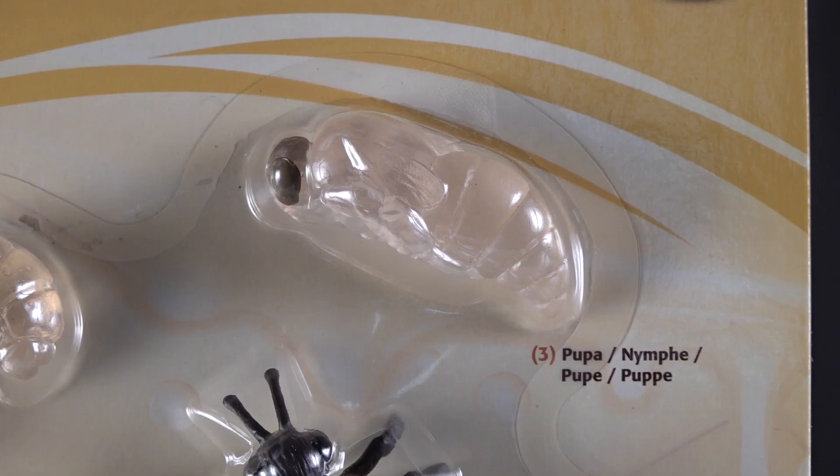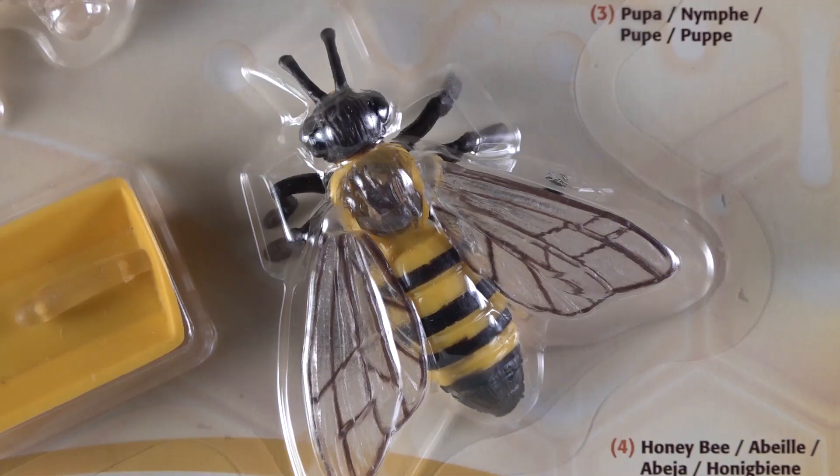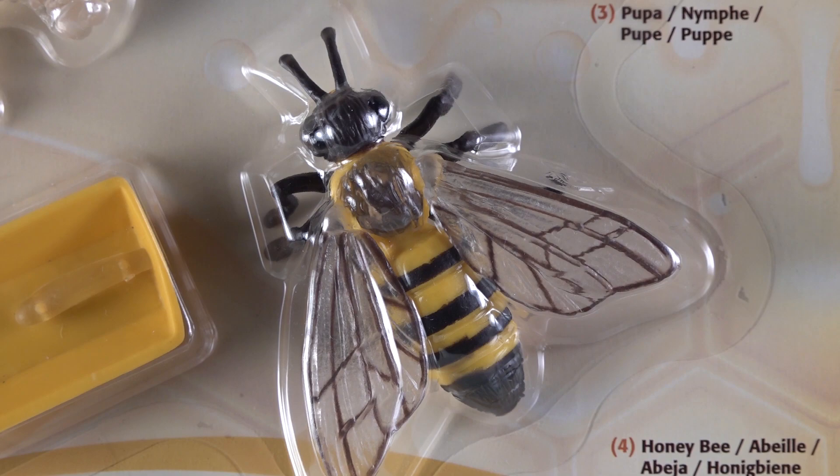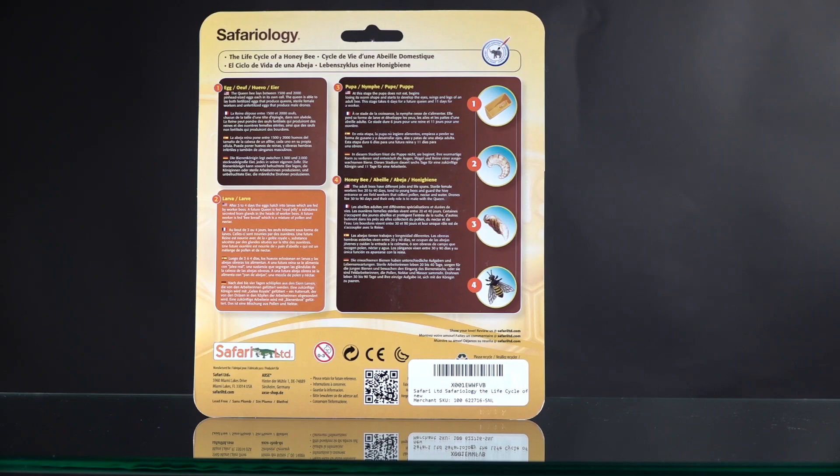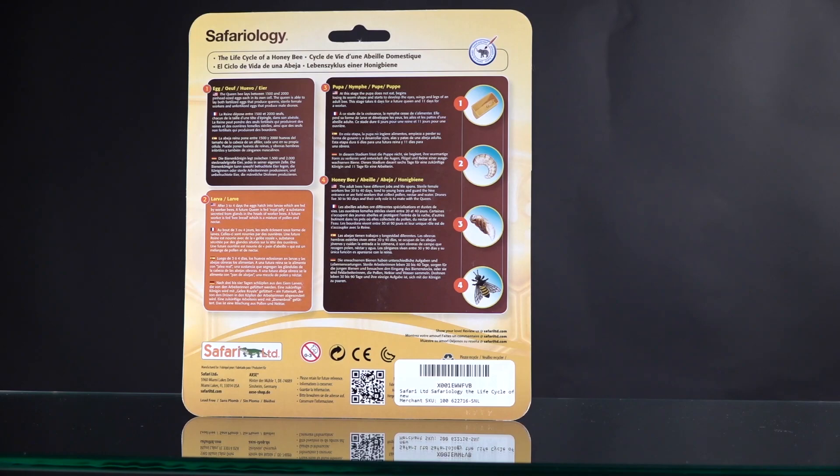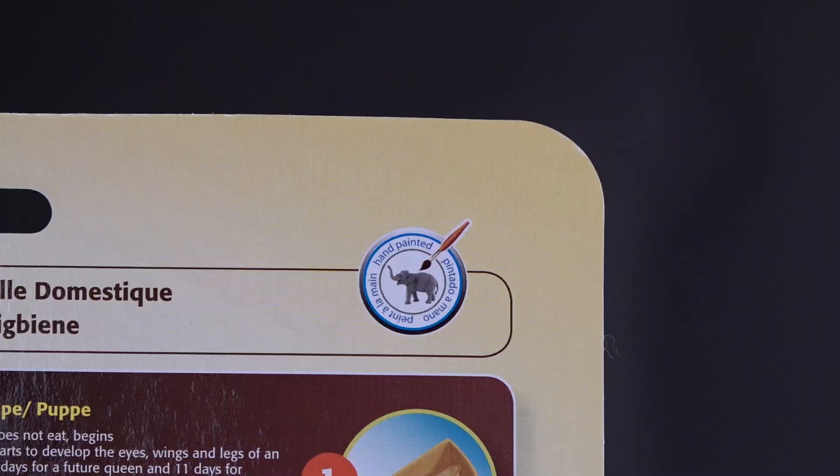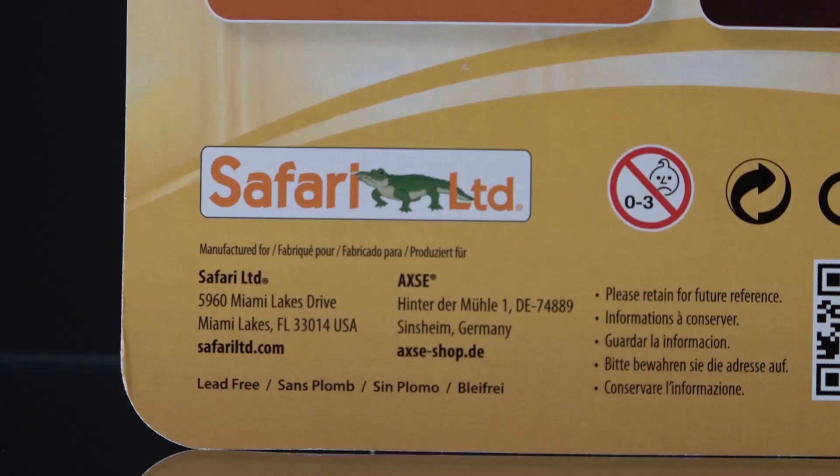This is a close-up of the pieces that are included here: an egg, the larvae, the pupae, and of course the honeybee, a single honeybee worker, so this is a female. On the back there's lots of text, so if you have a little one that wants to read it, you can read through it with them and get some more details about each stage of development.